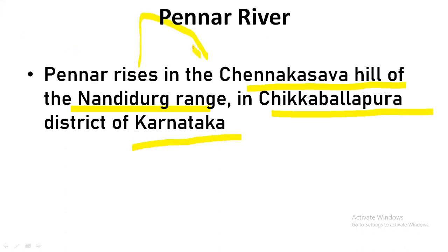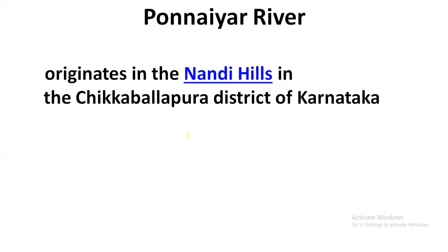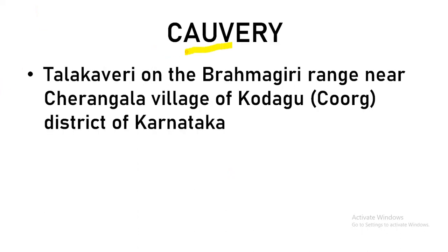Kaveri — also called Katalai Kaveri — originates in the Brahmagiri range near Kodagu district of Karnataka. Vaigai river originates in Varushanad Hills in Periyar Plateau of the Western Ghats. Vaigai river is very, very important because of its Sangam-era significance. Please note down all the hills. Hope you guys enjoy the video — thanks to all, bye.